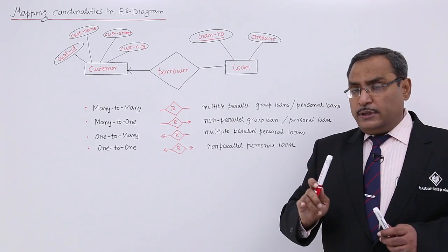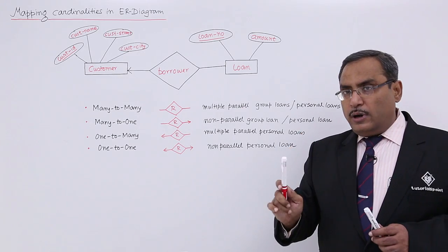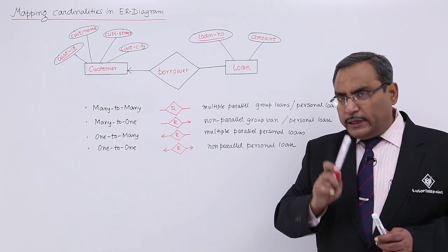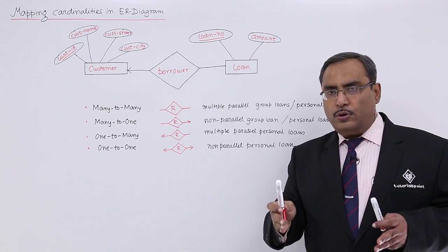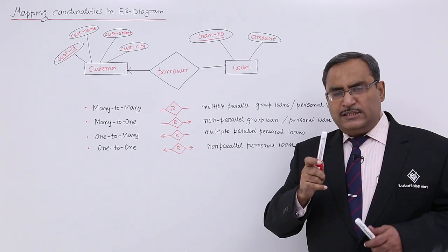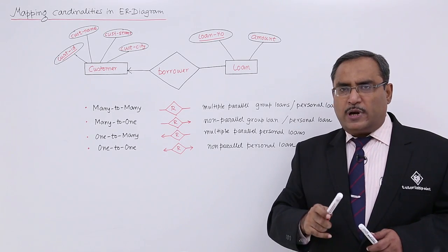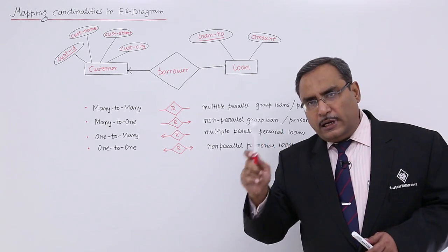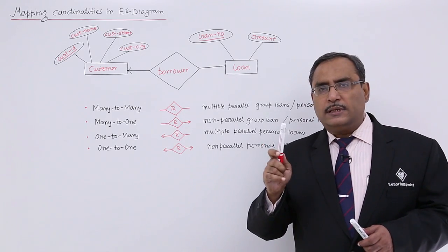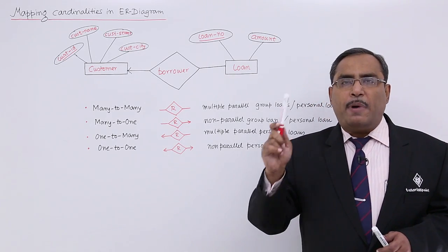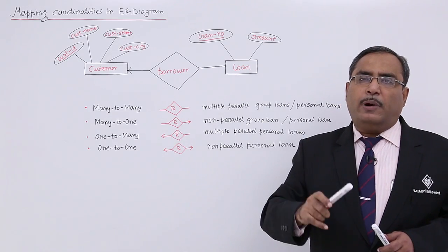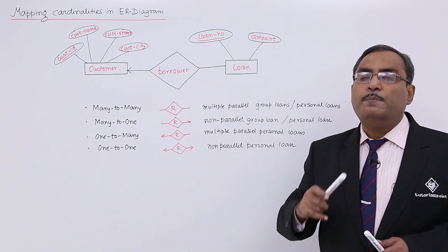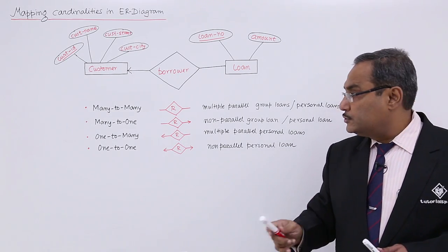Because against one Loan Number there will be one Customer ID, it is a personal loan, not a group loan. And against one Customer ID, we have multiple Loan Numbers — meaning the customer can enjoy multiple loans in parallel, all personal loans.